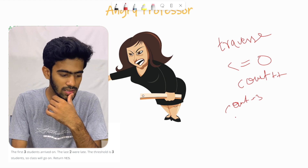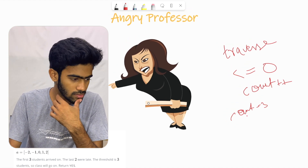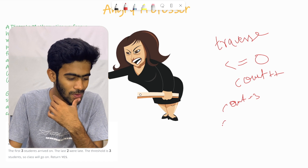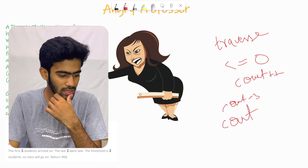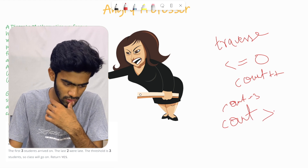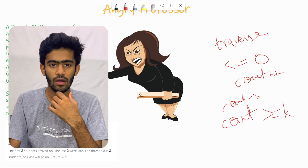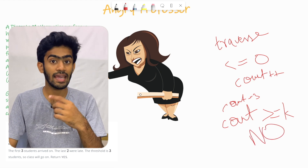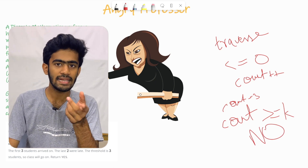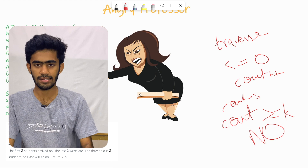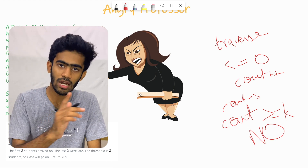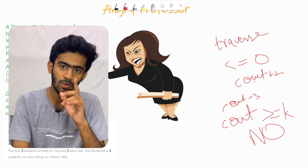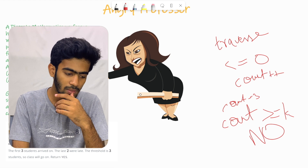If count equals three and the threshold is three, count is equal to or greater than the threshold, so class is not cancelled and we return NO (class goes on). We traverse, we see negative numbers, we increase the count, then we compare count to threshold. If count is greater than or equal to threshold, we print NO; otherwise we print YES (class cancelled).